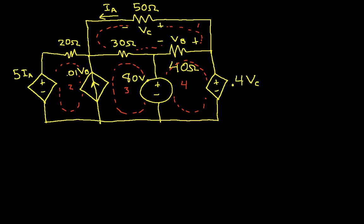Let's go on to step 2 in which we assign mesh currents. So we'll assign mesh current 1 to be like this, we'll call it I1. We'll assign mesh current 2 to be like this and call it I2. We'll assign mesh current 3 to be like this and call it I3, and mesh current 4 and call it I4.